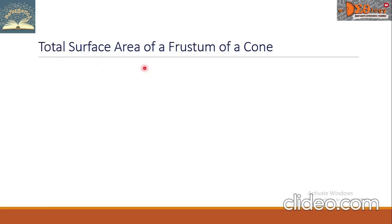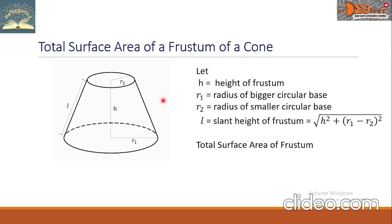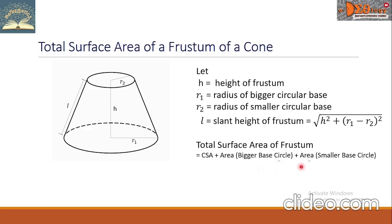The total surface area of a frustum of a cone equals the curved surface area plus the area of the bigger base circle plus the area of the smaller base circle: π(R₁ + R₂)L + πR₁² + πR₂².